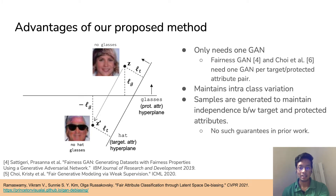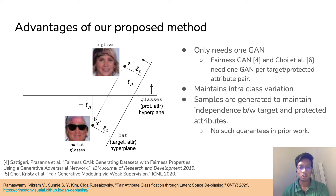Computing our balanced synthetic dataset in this way has many advantages. First, our method can use a single GAN to decorrelate multiple target-predictor pairs, whereas previous works required one GAN per attribute pair. This method also preserves intraclass variation — for example, smiling ranges from not smiling to partially smiling to fully smiling, and since the Z's are chosen at random, a similar distribution exists in the synthetic dataset. Finally, samples are generated to maintain independence between target and predictor attributes.